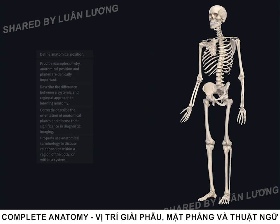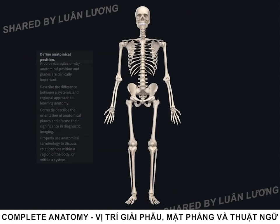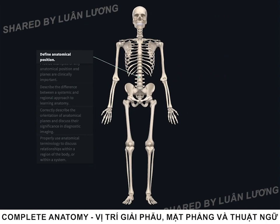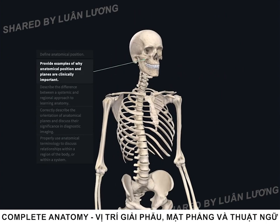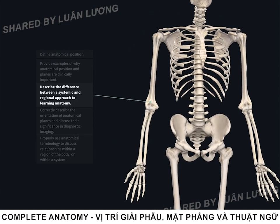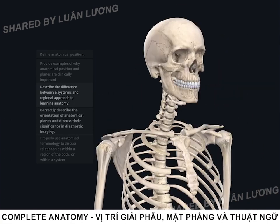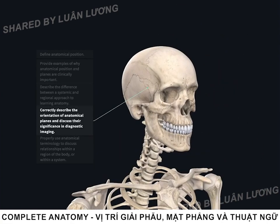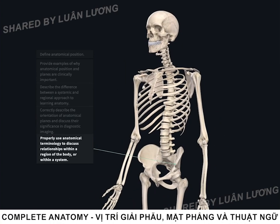By the end of this lecture, you will be able to define anatomical position, provide examples of why anatomical position and planes are clinically important, describe the difference between a systemic and regional approach to learning anatomy, correctly describe the orientation of anatomical planes and discuss their significance in diagnostic imaging, and properly use anatomical terminology to discuss relationships within a region of the body or within a system.